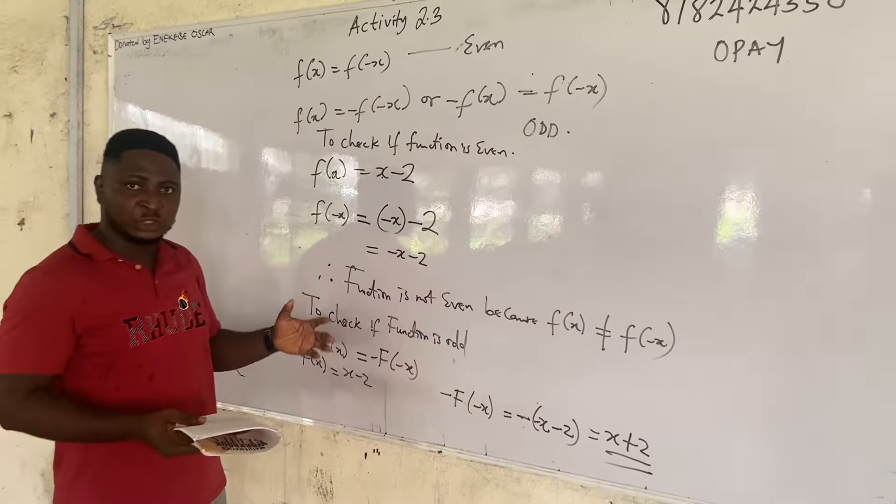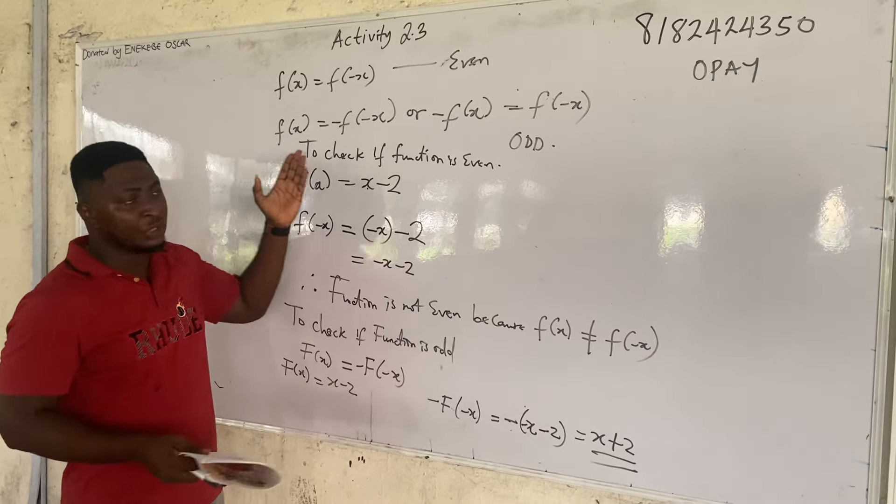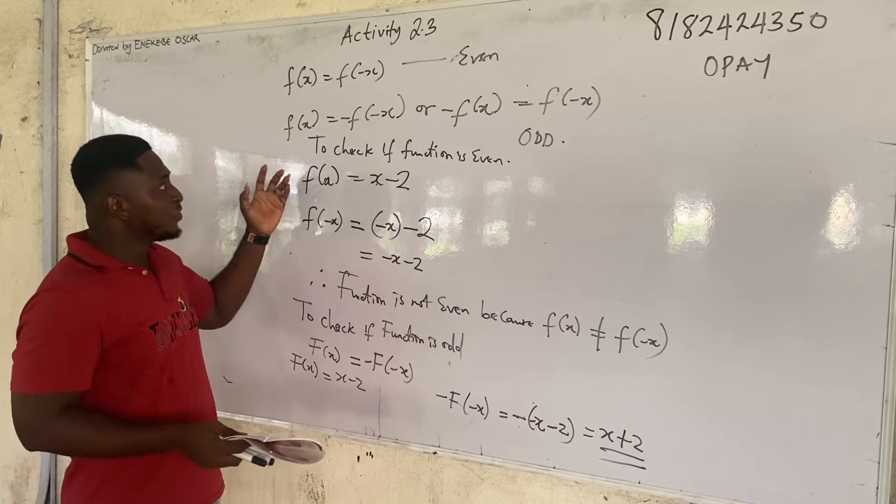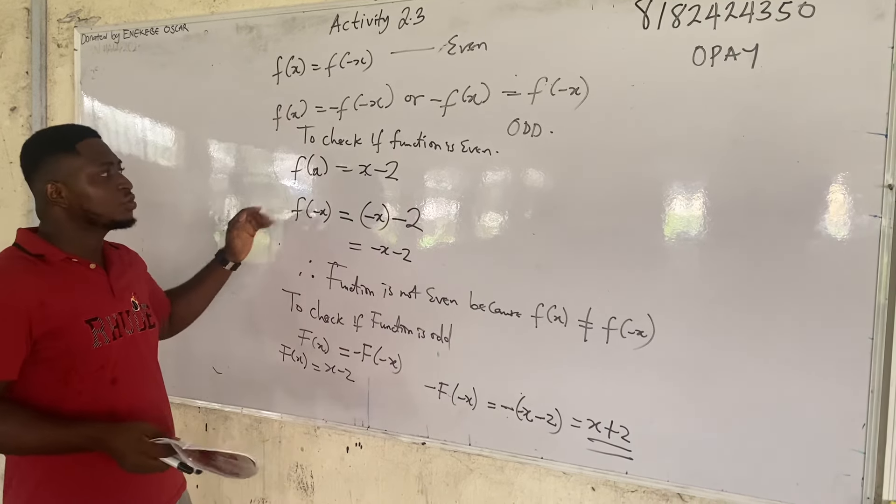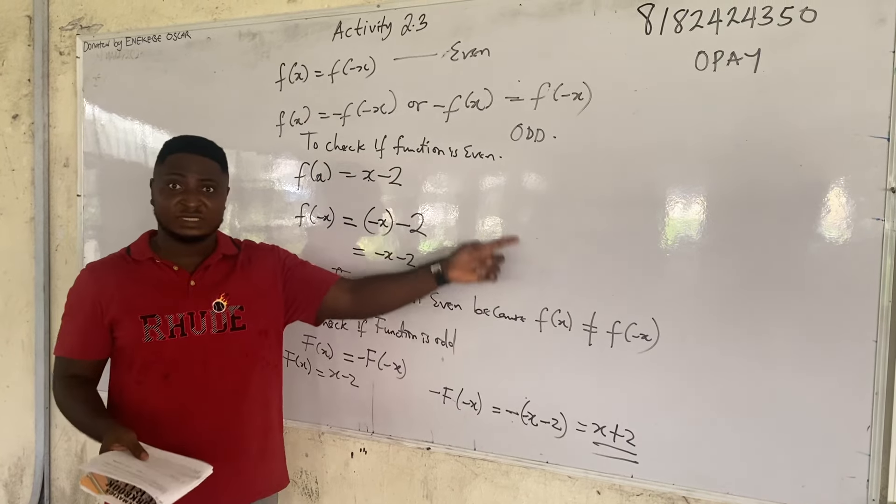So we have the condition for a function to be even and we have the condition for a function to be odd. And we also have the condition for a function to be neither even nor odd. So first of all we have to check if the function is even. See what I wrote here. To check if the function is even.